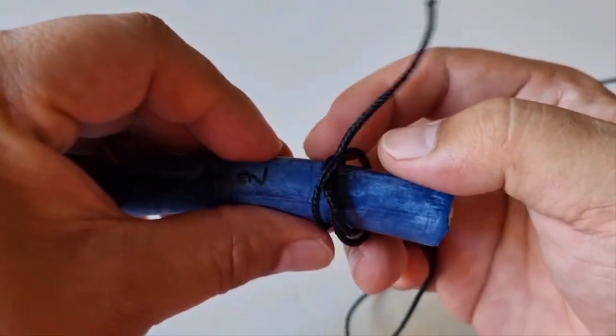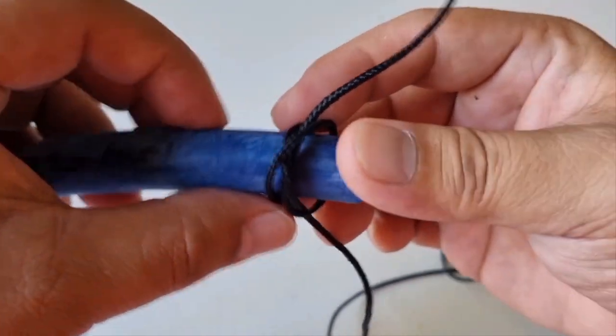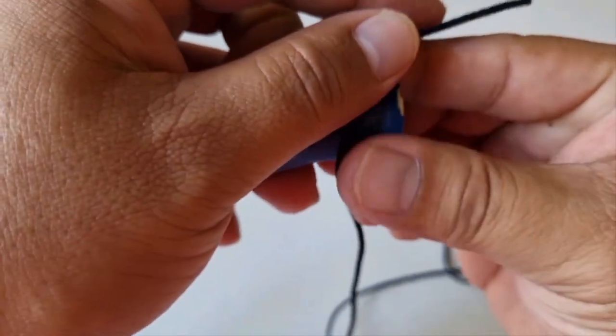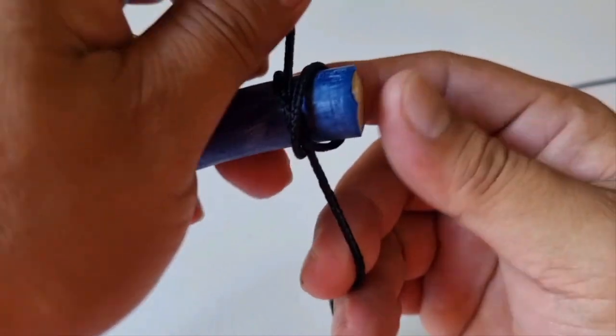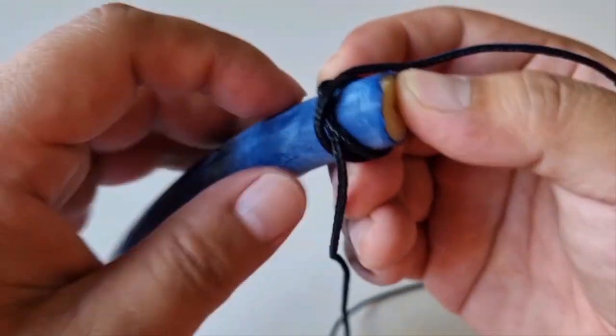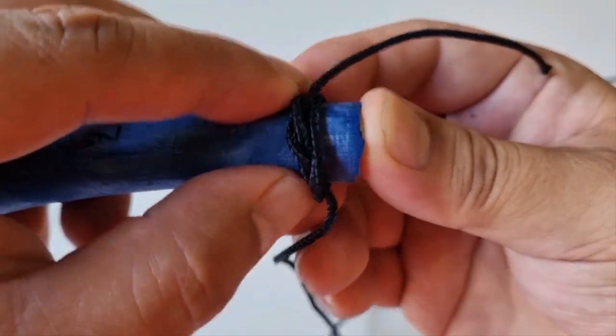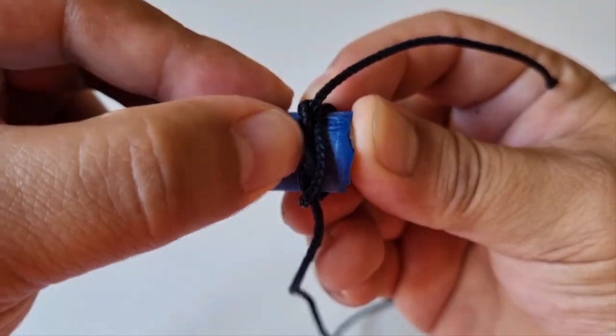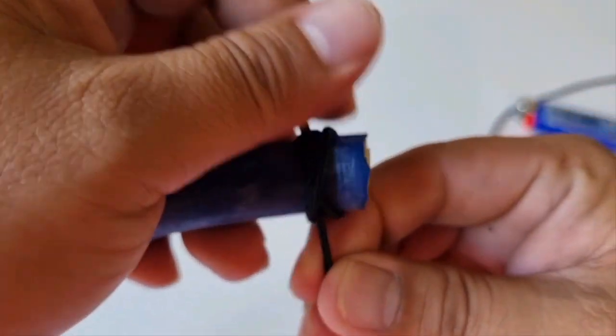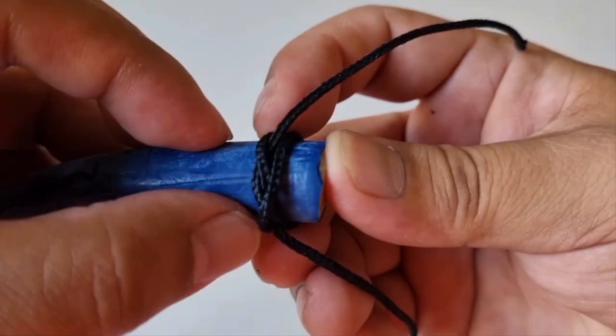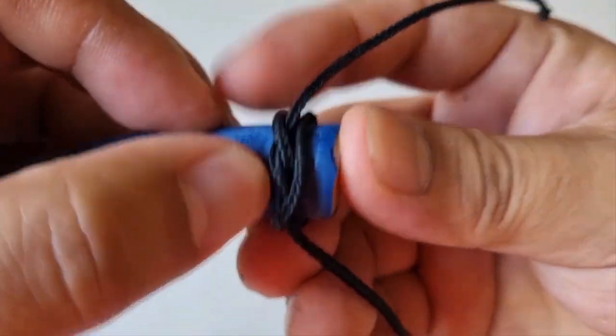Pag nagtatali ka, mas okay na medyo itaas mo. Kasi may tendency yan na bumaba pag hinigpitan mo. So ganyan dapat ang itsura nya. Medyo mahirap yung manipula kasi nasa likod ako ng camera. But basically, kailangan hanggat kaya mo na itaas sa dulo.